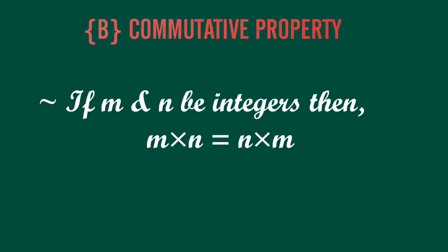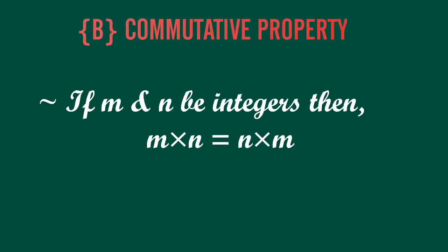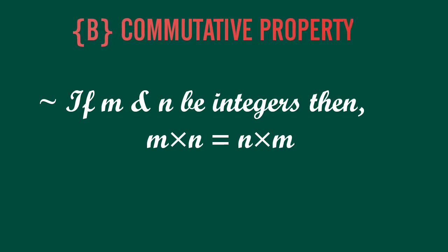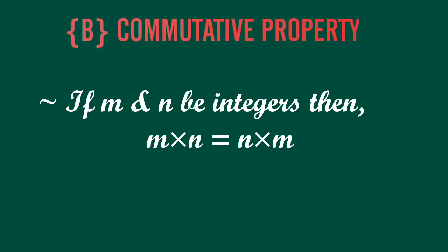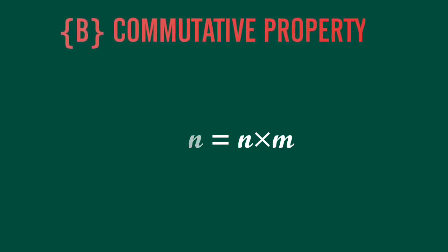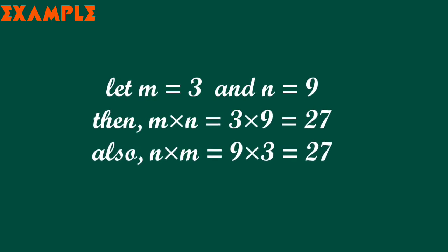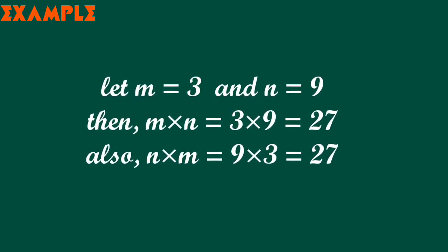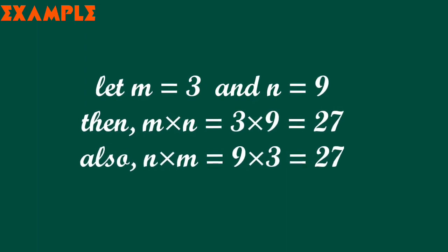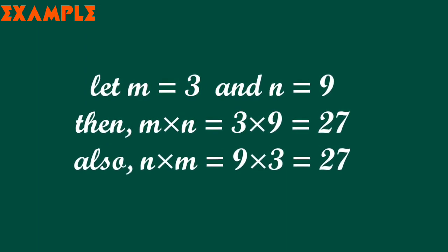Commutative property: if m and n be any two integers then m multiplied by n is equal to n multiplied by m. In this example, if m equals 3 and n equals 9, then m into n equals 27 and also n into m equals 27.